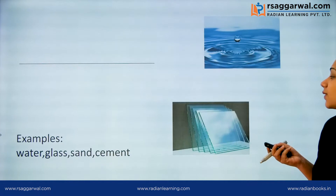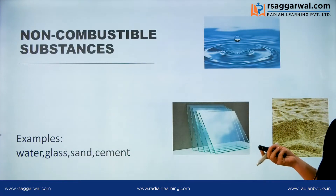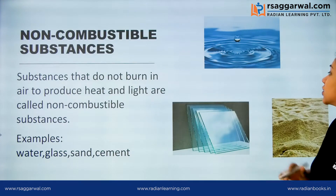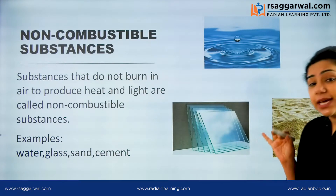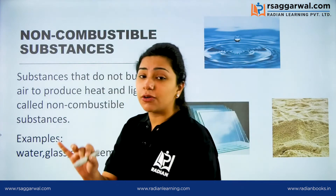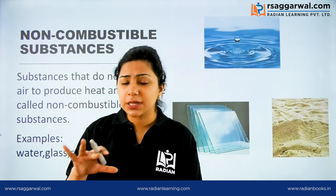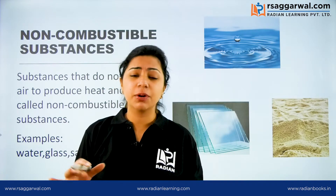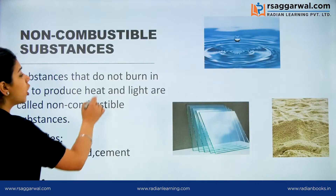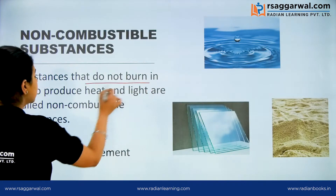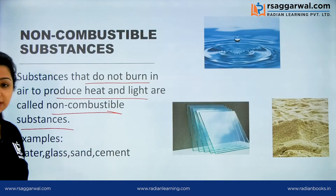Now, examples of incombustible substances — which do not burn — are non-combustible substances like water, glass, or cement. In these substances, heat or light is not produced. They do not burn to produce heat and light, and we call them non-combustible substances.